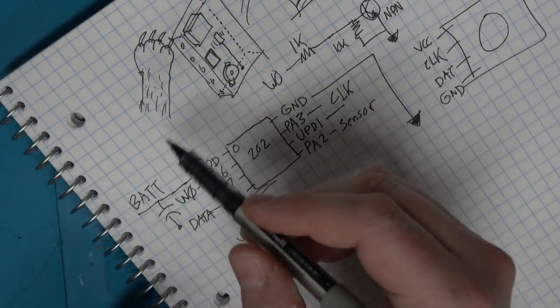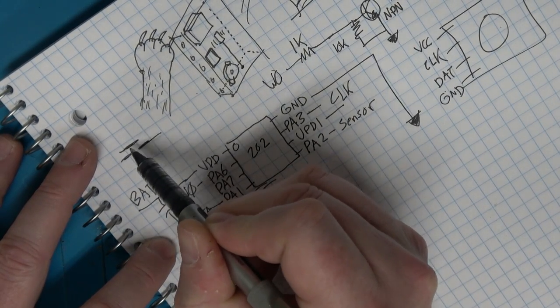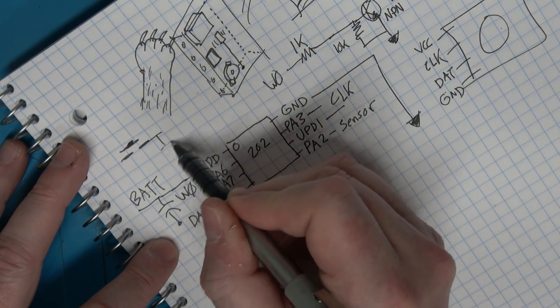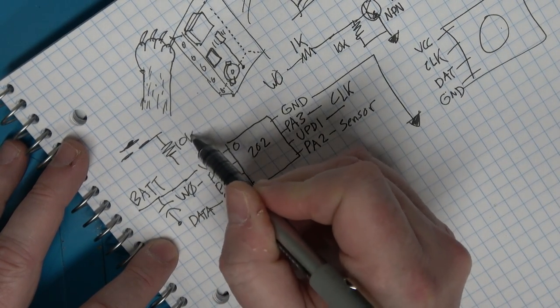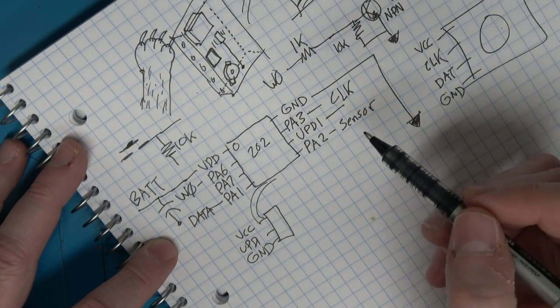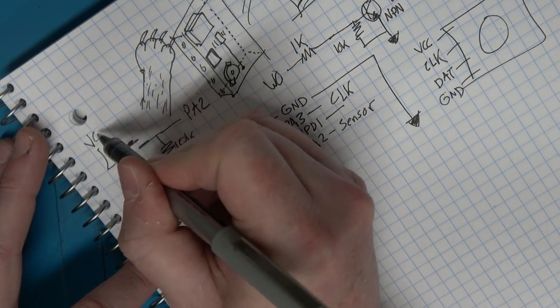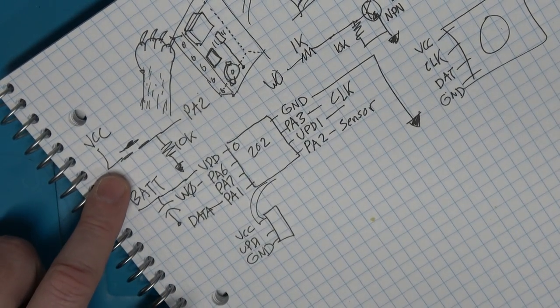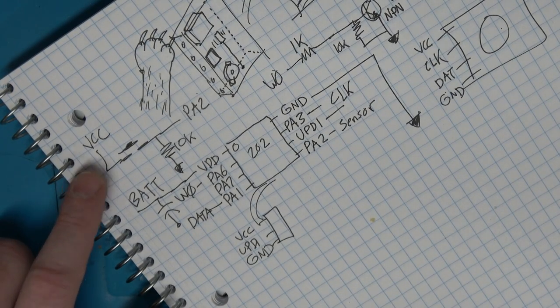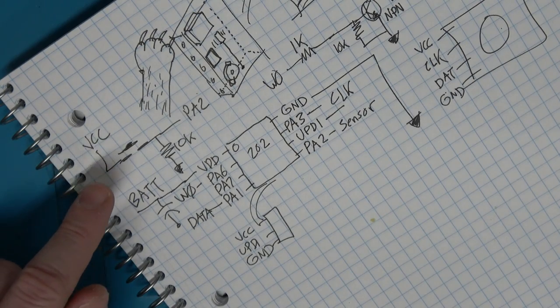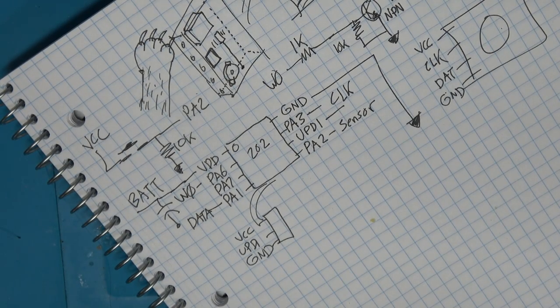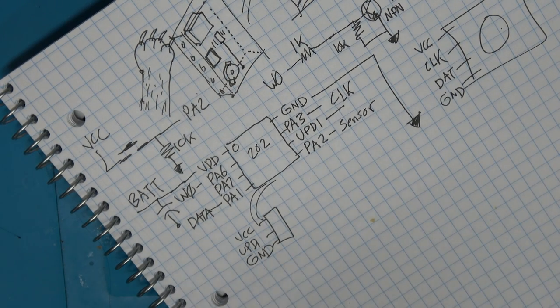For our CAN sensor, I'll draw it as a switch. I'm going to do a weak pull down, and then that'll go to PA2. When the switch closes, we'll have a rising edge interrupt that'll take us to VCC. That way it's not drawing current when the switch isn't being closed.